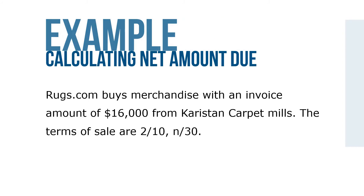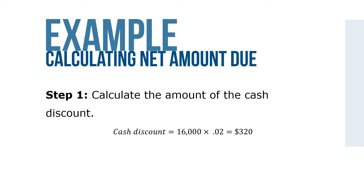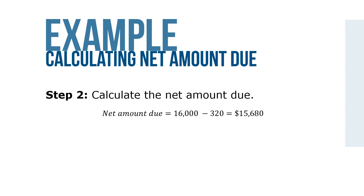Let's take a look at an example. Rugs.com buys merchandise with an invoice amount of $16,000 from Cardist and Carpet Mills. The terms of sale are 2/10/N/30. Step 1: Calculate the amount of the cash discount — $16,000 × 0.02 = $320. Step 2: Calculate the net amount due — $16,000 minus $320 equals $15,680.